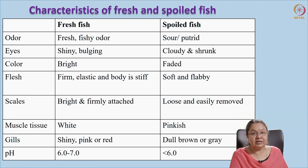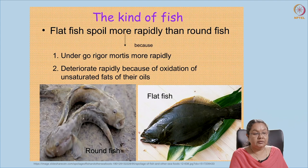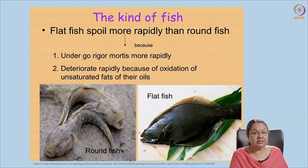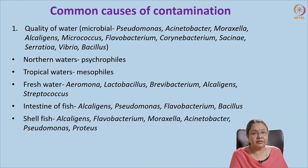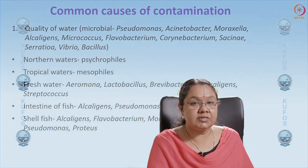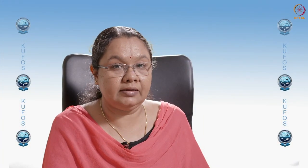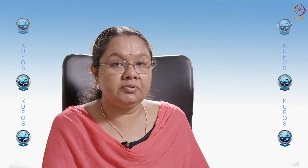The degradation of proteins and lipids causes a reduction in pH, which comes down to below 6 in the case of spoiled fish. Usually, flat fish undergo spoilage more rapidly than round fish because they undergo rigor mortis more rapidly. This is also because of the deterioration of the unsaturated fatty acids that are seen in flat fishes.